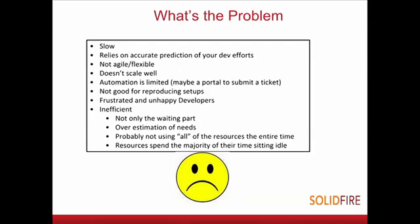The problem with both of these approaches is that no matter what, it's slow. There's a lot of lag time dealing with tickets and submitting requests. It also relies on accurate prediction — and developers typically aren't the best at predicting exactly what things are going to look like. Things tend to look significantly different by the time you're done. It's also a very inflexible way to work. It's not agile, not flexible — it's very rigid and introduces a lot of constraints.